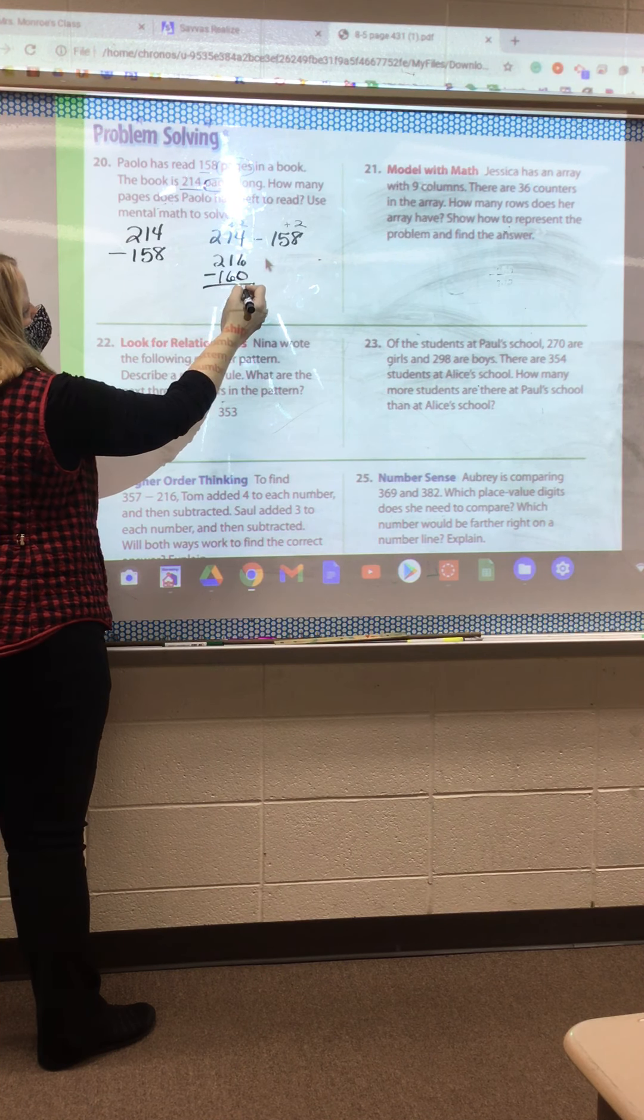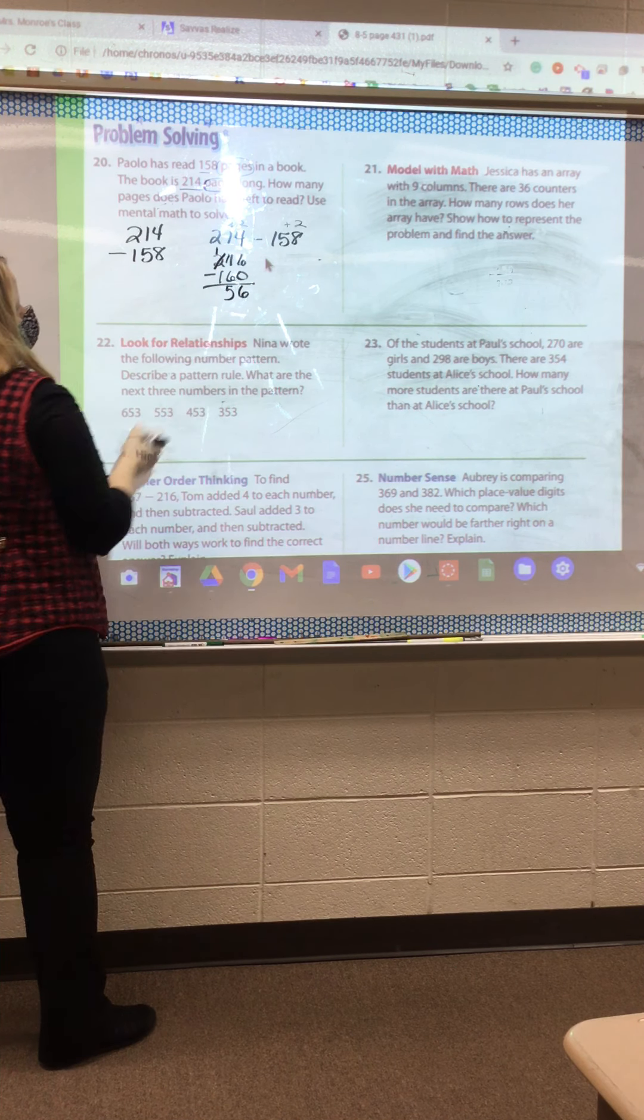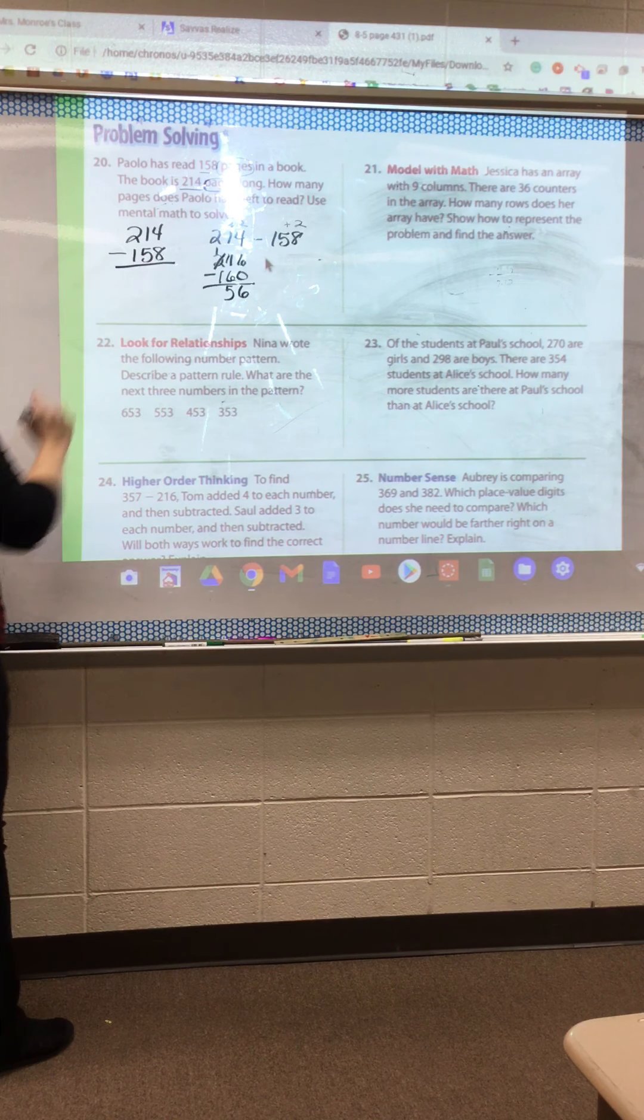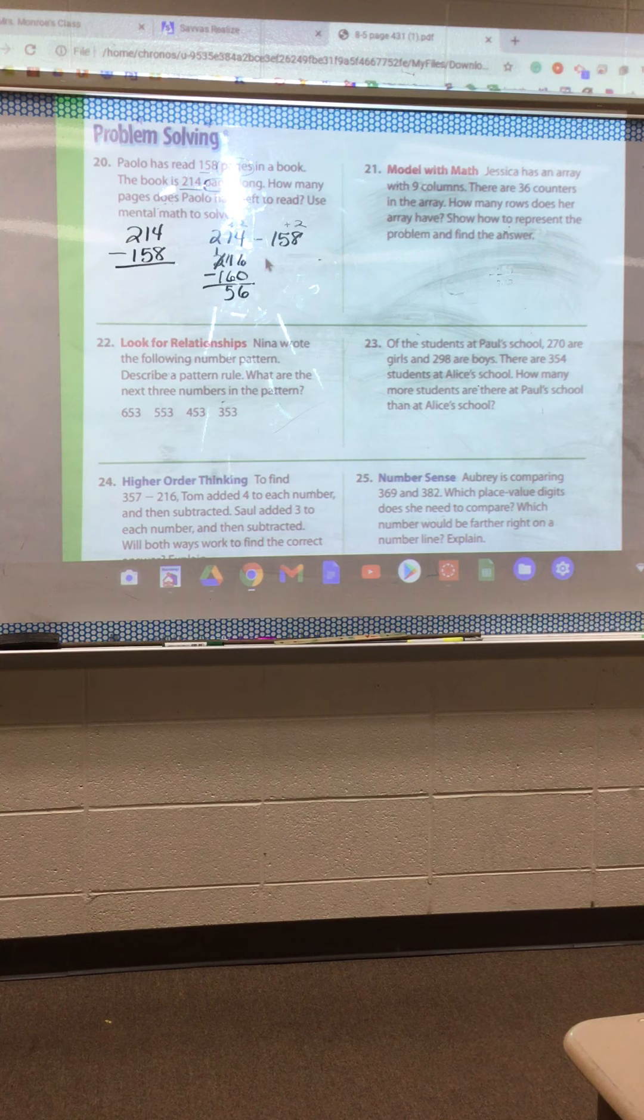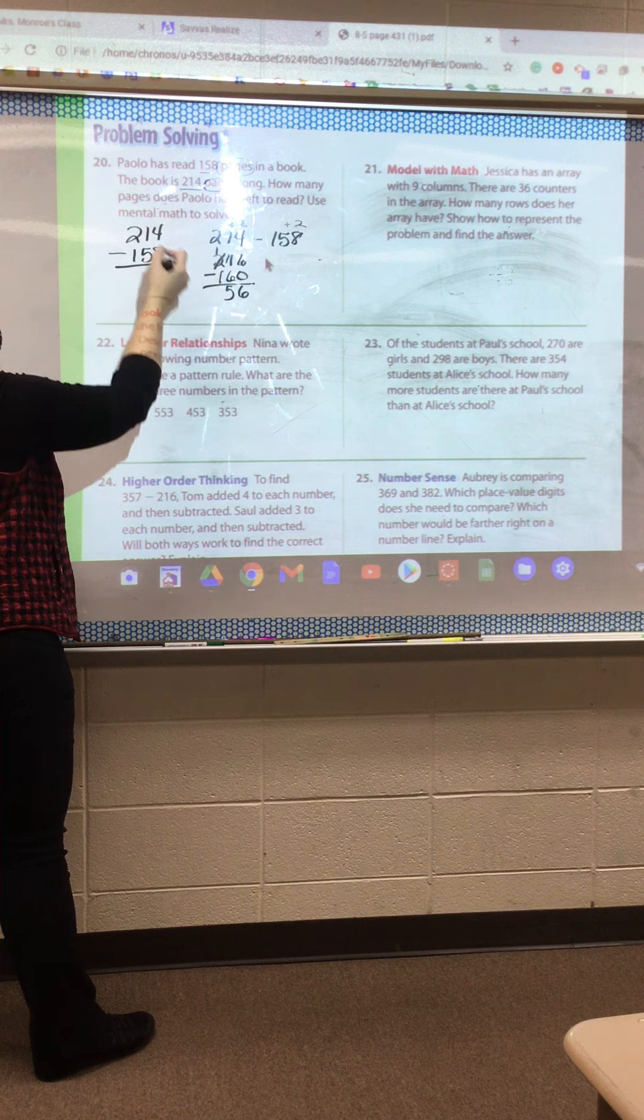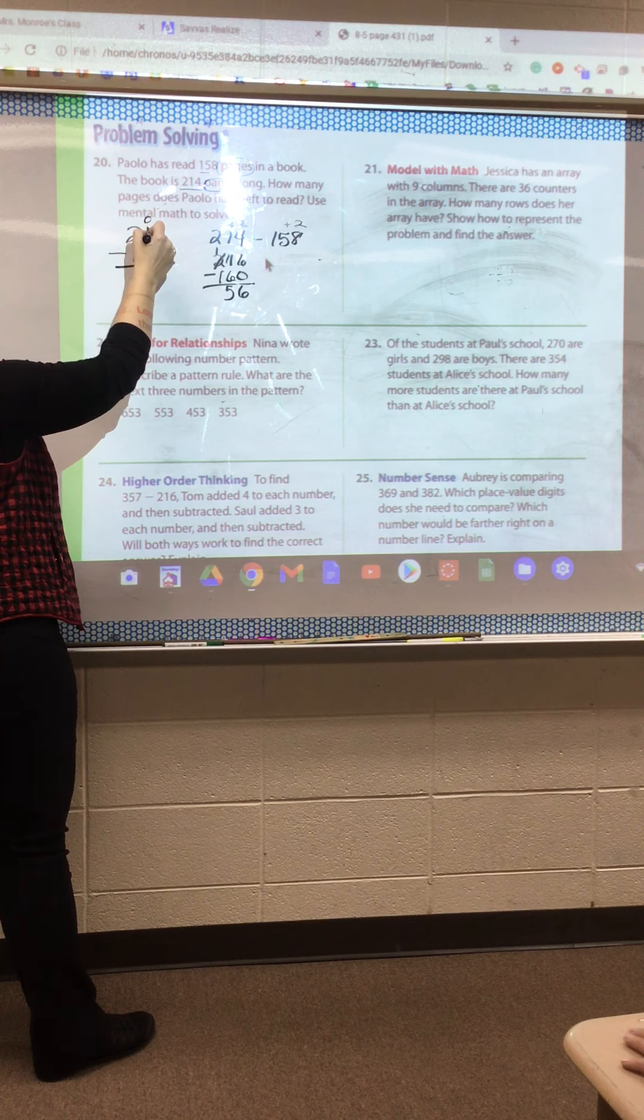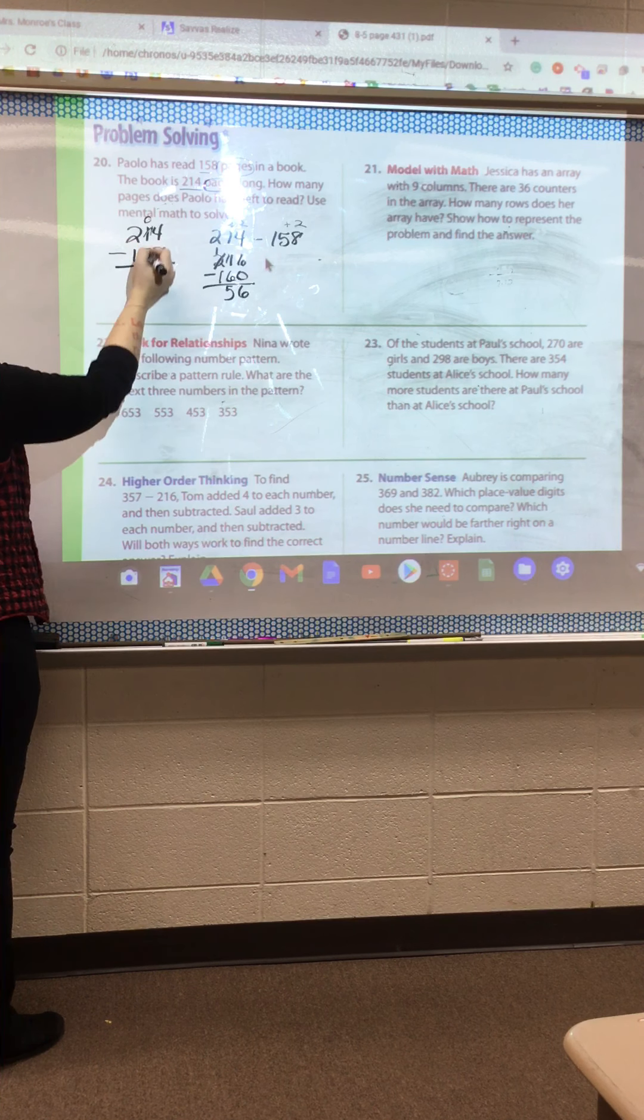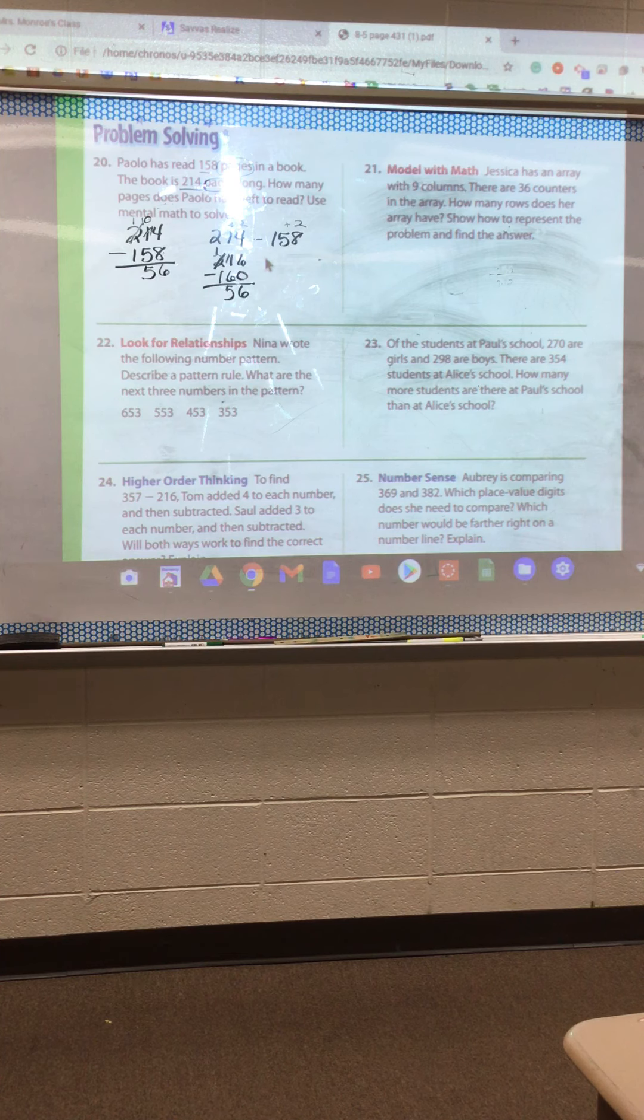So I can get 6 minus 0 is 6. I'm still going to have to do some borrowing. I get 56. Or you can just stack it, right? What else could we do? We could count on, right? You want to try counting it on? Let's do it here to make sure we're right first. 4 minus 8, can I do that? Or 8 minus 4, can I do that? Nope. So, my 1 here, I'm going to count up. You got it? I think I'm going to leave it there.